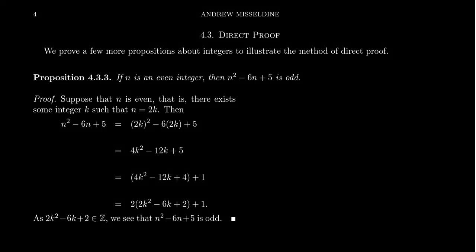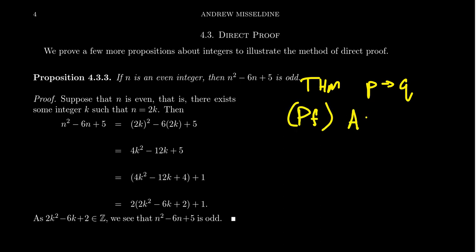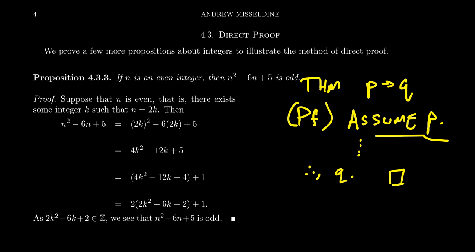In our previous lecture, we introduced the method which we call direct proof. If you're trying to prove a statement which is conditional in form — so you're trying to prove P implies Q — the template for the proof is: you assume P is true, maybe unravel some definitions, bridge some logical gaps, and then you conclude that Q is true as well. This is the method of direct proof.